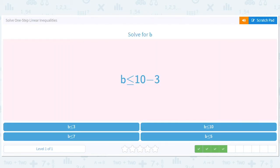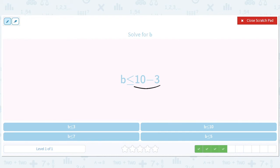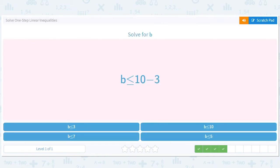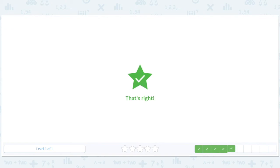B is less than or equal to 10 minus 3. Well, B is already on one side. There's a 7 on the other. B is less than or equal to 7. How fun.